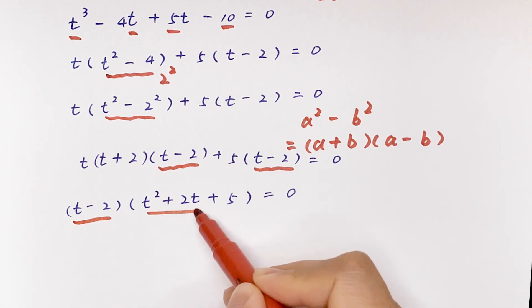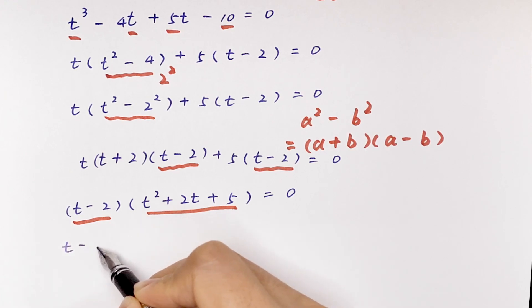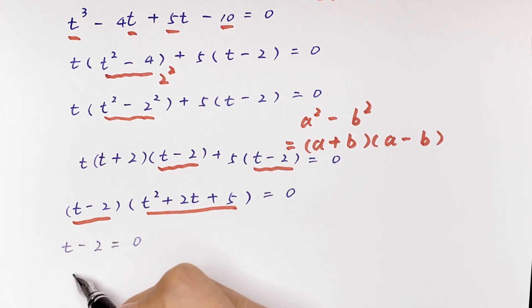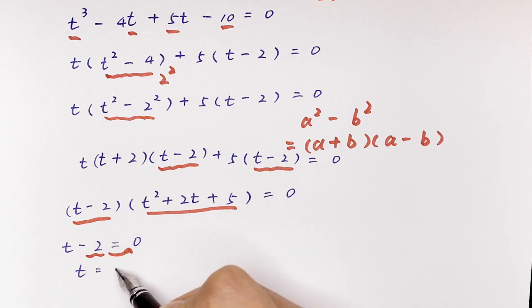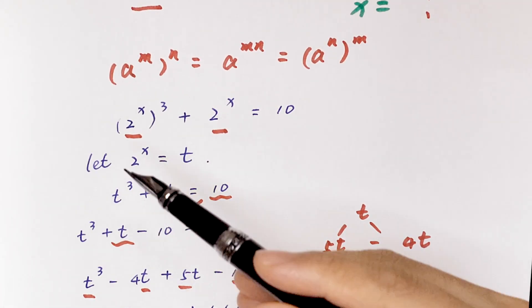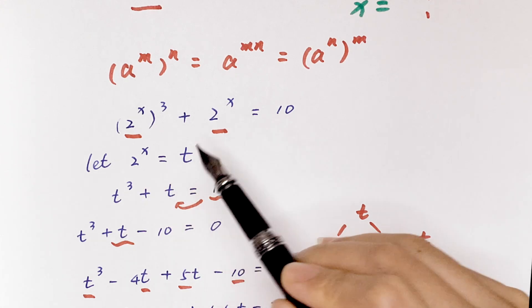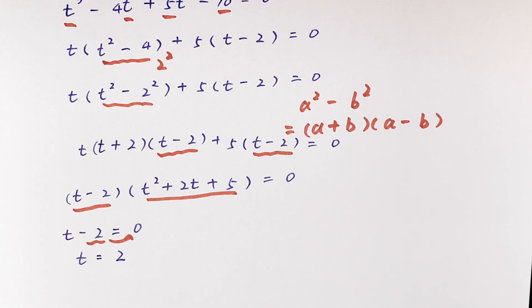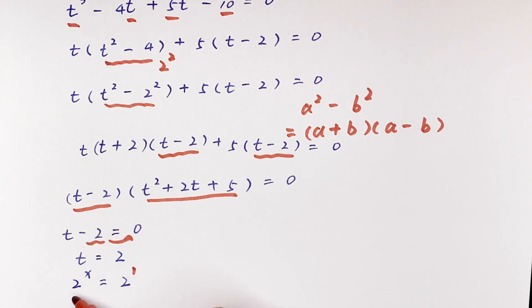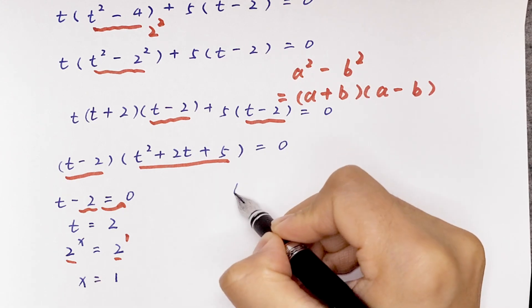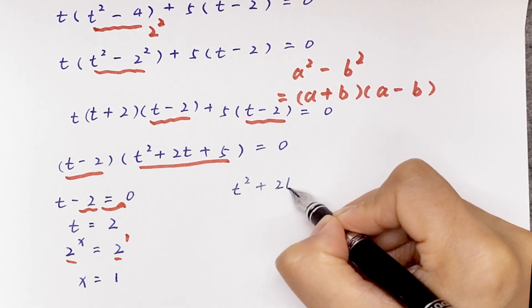We have two cases. Case one: t minus 2 equals 0, so t equals 2. Since we let 2 to the power x equal t, we have 2 to the power x equals 2, which is 2 to the power 1. Since the bases are the same, we compare powers: x equals 1.